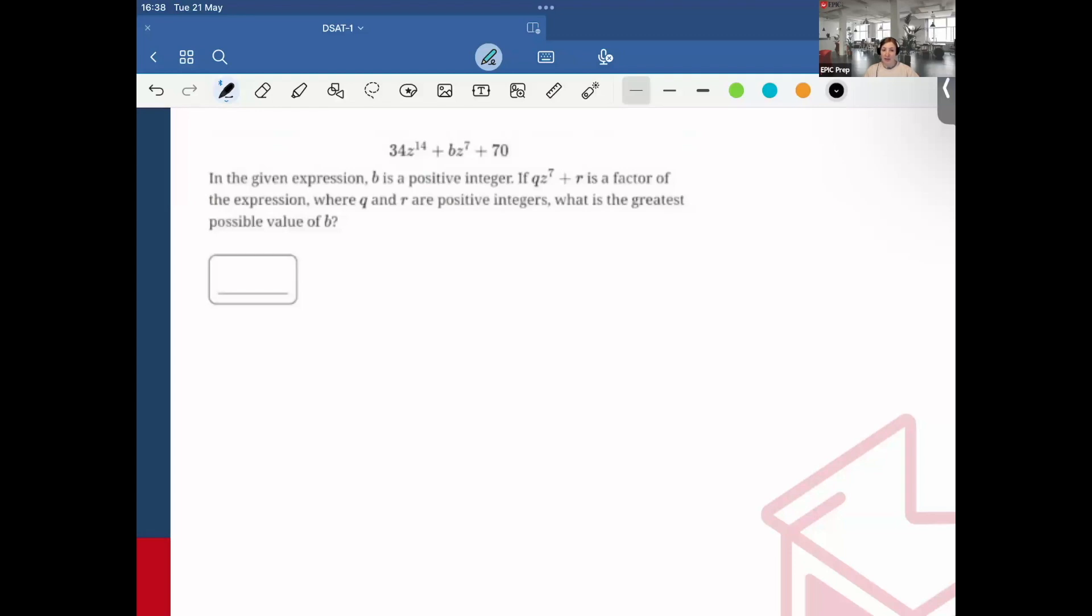Here I can no longer plug this into Desmos because I have two variables. So what I'm going to do is factor. Let's be methodical with this problem. First, let's look at what's given: b is a positive integer, qz^7 + r is a factor, and q and r are positive integers.